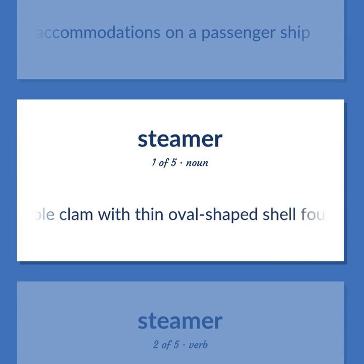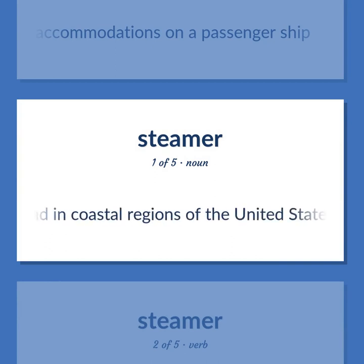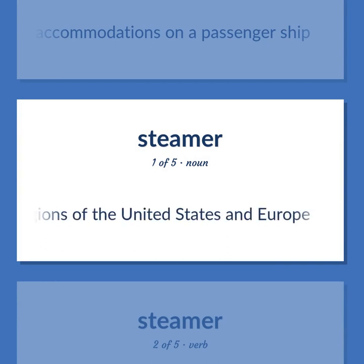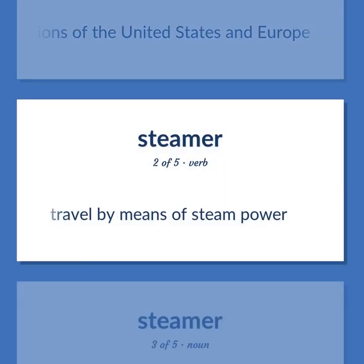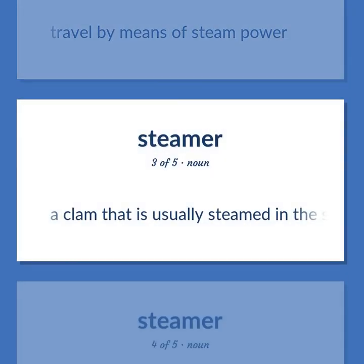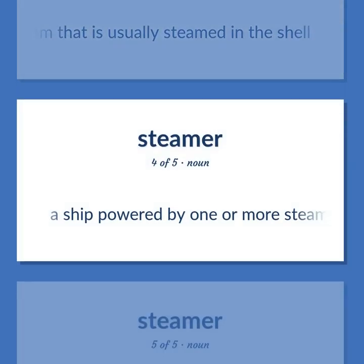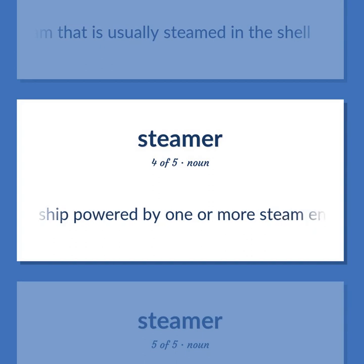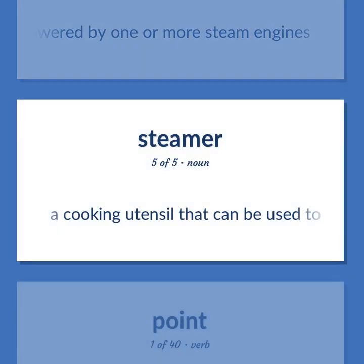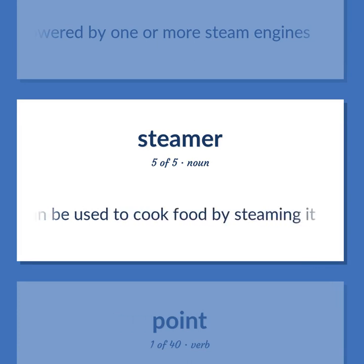An edible clam with a thin oval-shaped shell found in coastal regions of the United States and Europe. Travel by means of steam power. A clam that is usually steamed in the shell. A ship powered by one or more steam engines. A cooking utensil that can be used to cook food by steaming it.